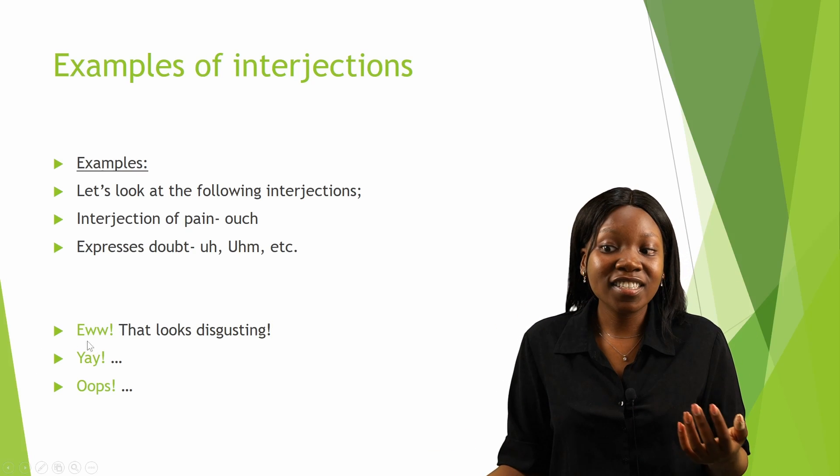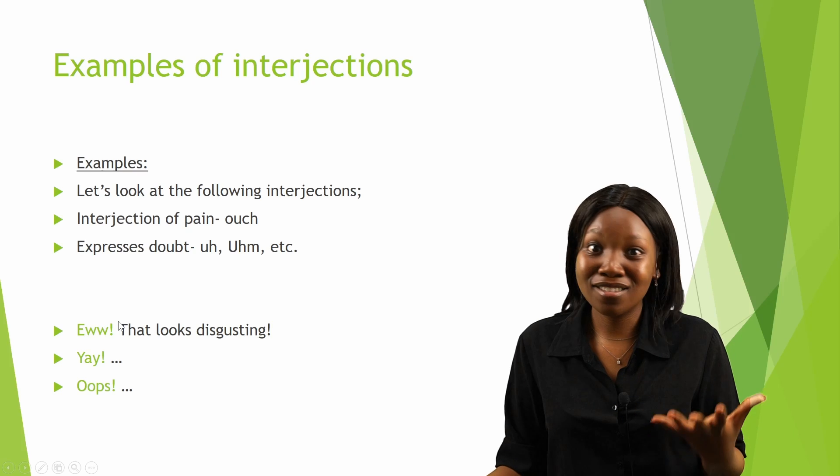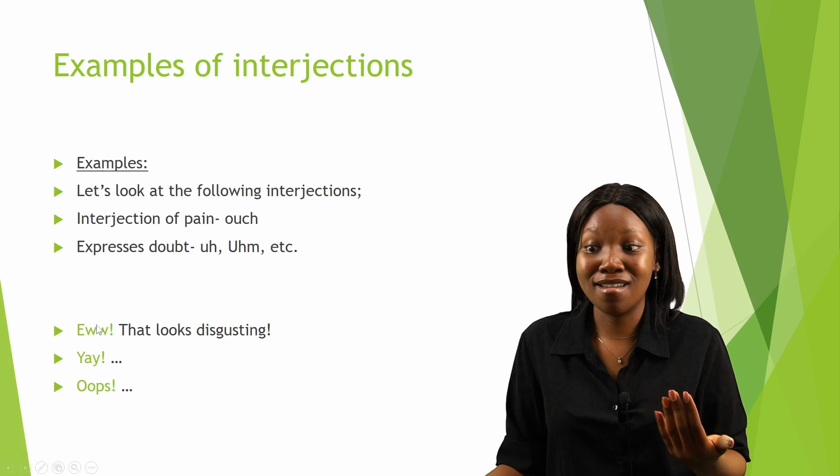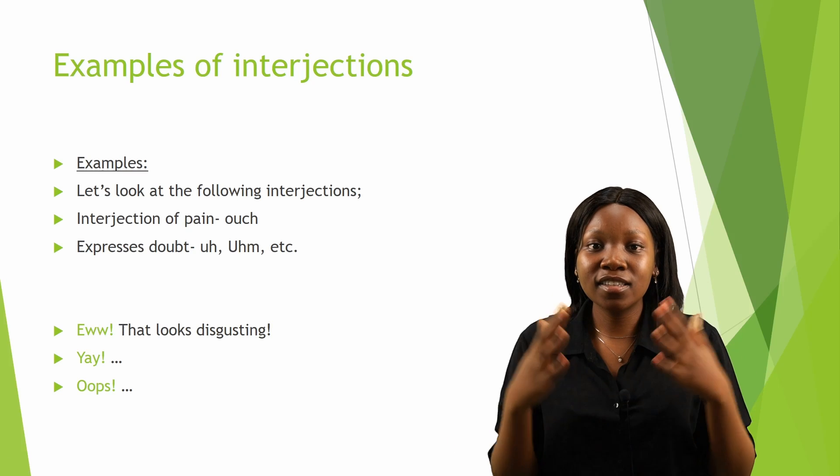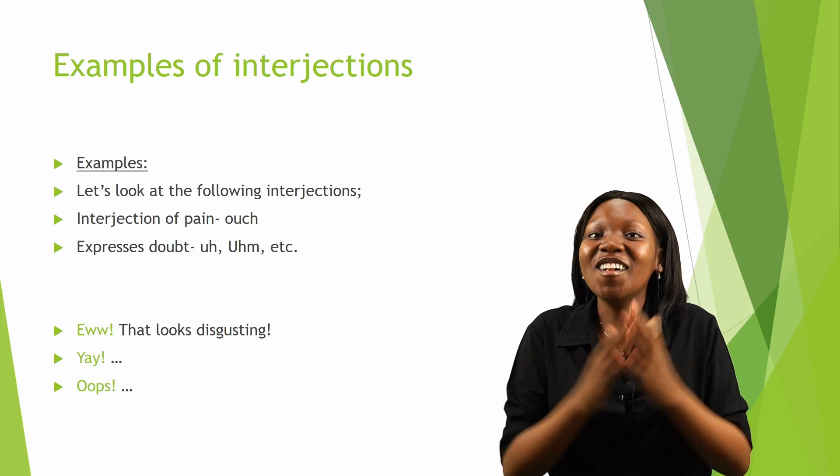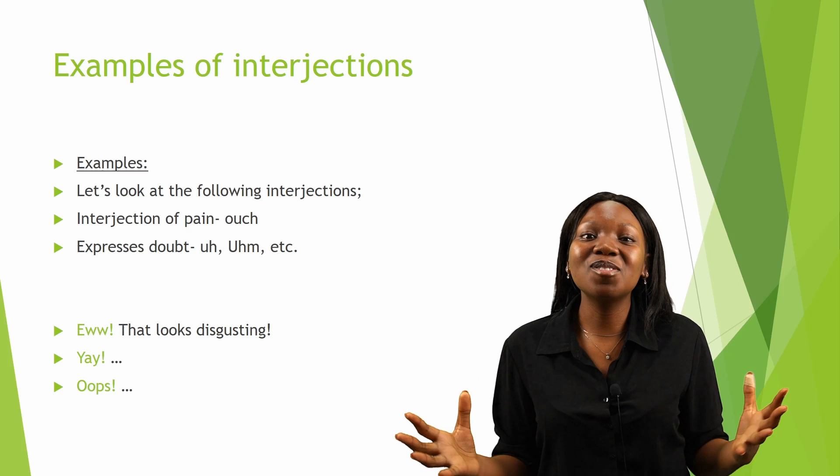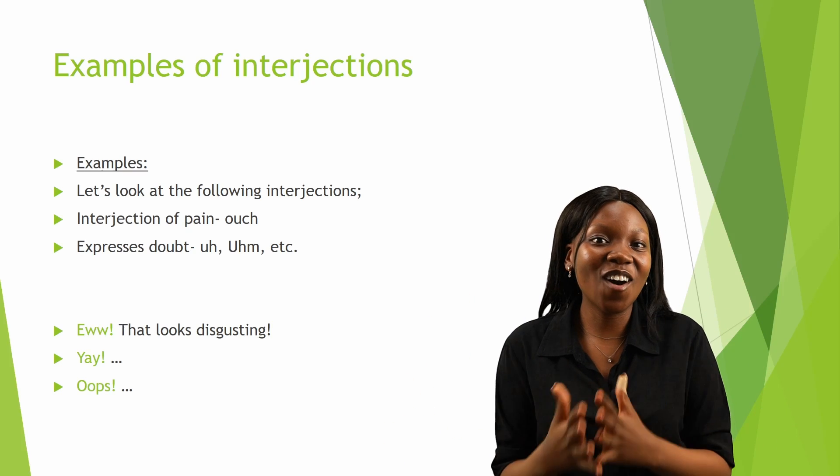So 'Ew!' would be an interjection of disgust or repulsion, and then 'Yay!' would be an interjection of surprise, happiness, or joy. I hope this helps you understand what interjections are and you are well informed on the different parts of speech.